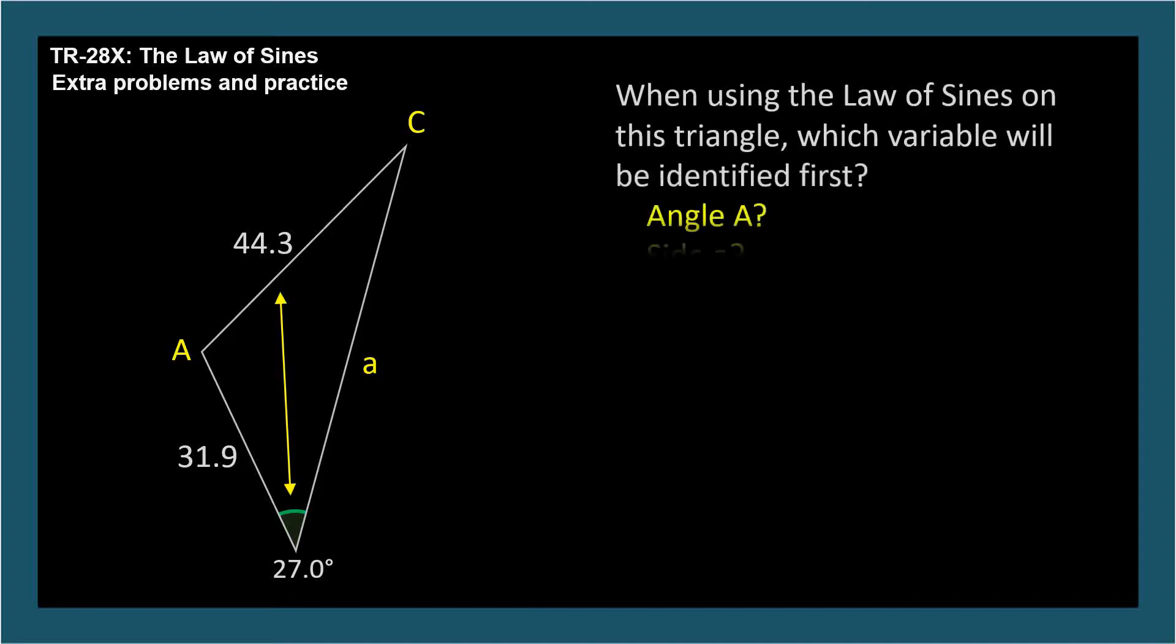So, when using the Law of Sines on this triangle, which unknown variable will be identified first? Angle A, Side A, or Angle C? We solve for the variable opposite the other known, in this case Angle C.